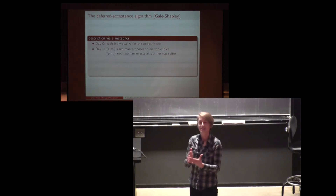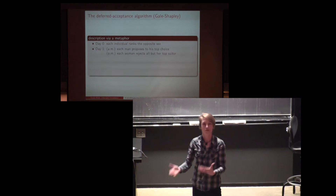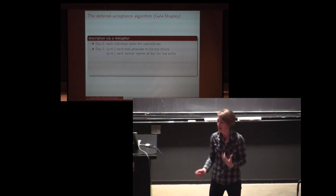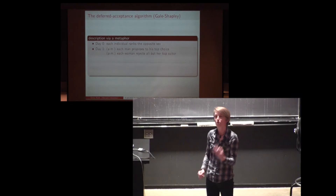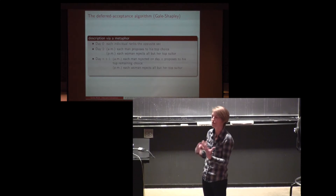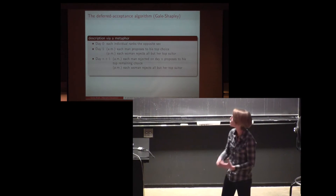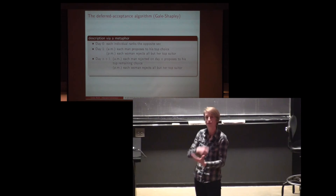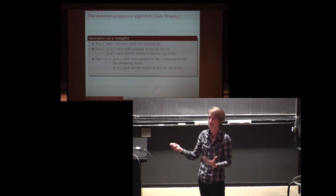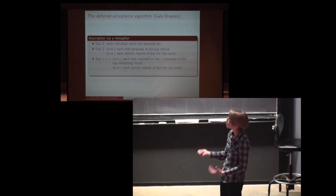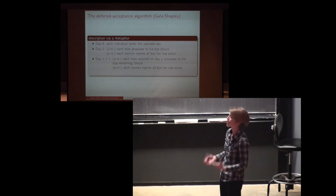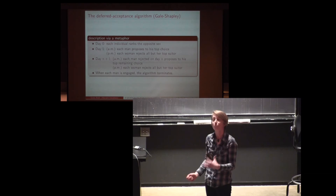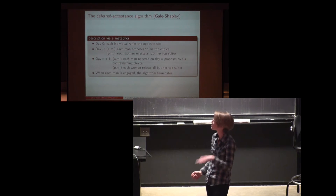Then on the first day, the men propose to their best choice. Some women receive multiple proposals; others receive none. A woman with a choice will reject all but her best suitor, and on the basis of that we have a tentative engagement. Then on subsequent days, any man who was rejected proposes to his next best choice, and the women then have a chance to trade up.